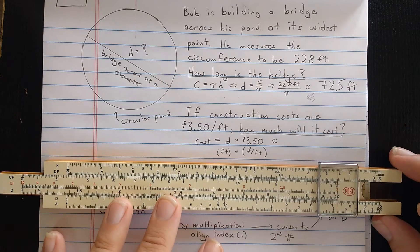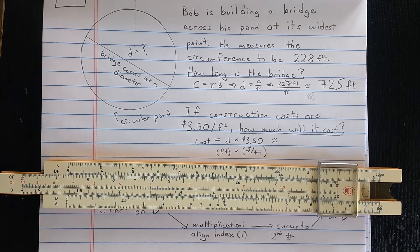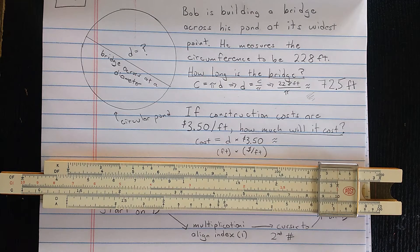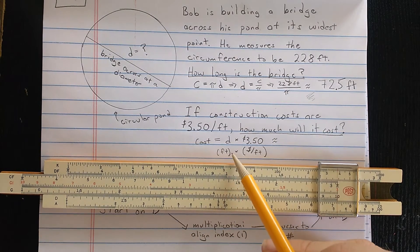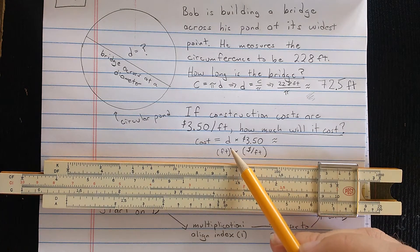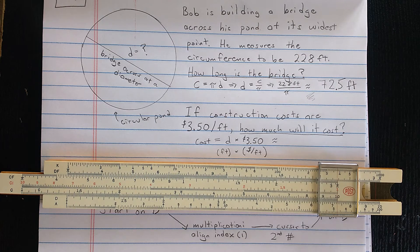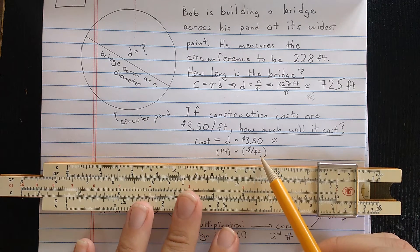Okay, second part of the question: if construction costs are $3.50 per foot, how much will it cost? Well, the total cost is going to be the length that we found, the diameter of the pond, times $3.50 per foot.